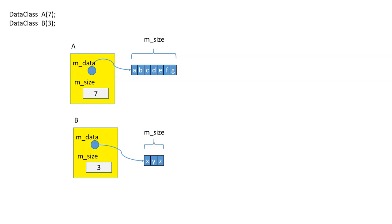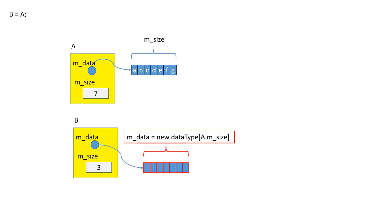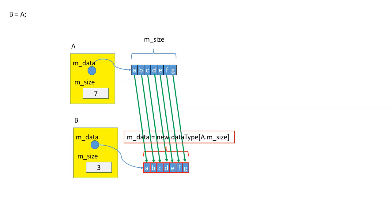When assignment happens, I first delete the data — that's what allocopy did. First delete to prevent memory leak. Then get the size of the other object using strlen, allocate memory, copy every single thing from the other one to here, and then update the size. When everything is done, I have two separate objects with the same data at different locations — no memory leak.